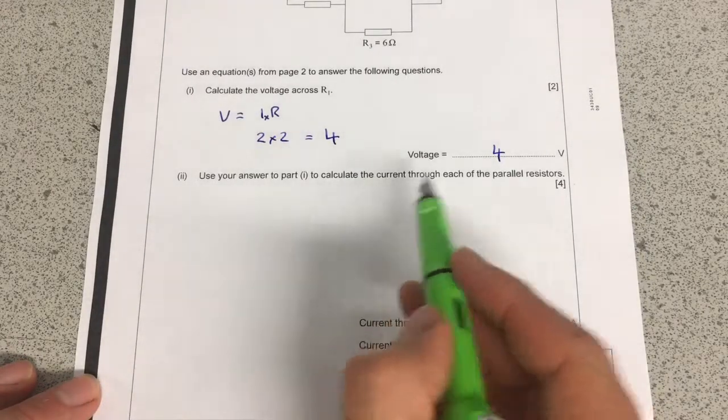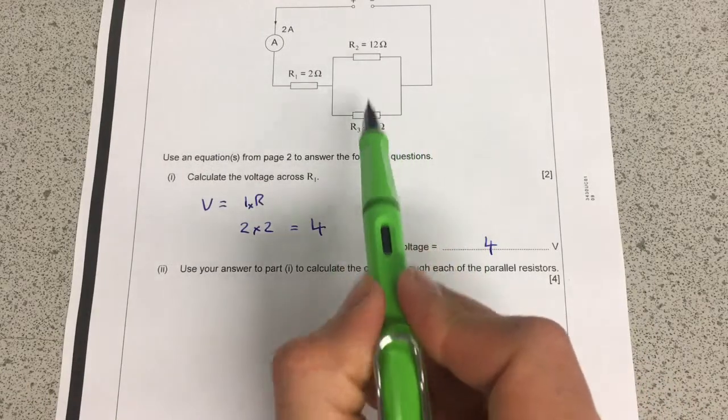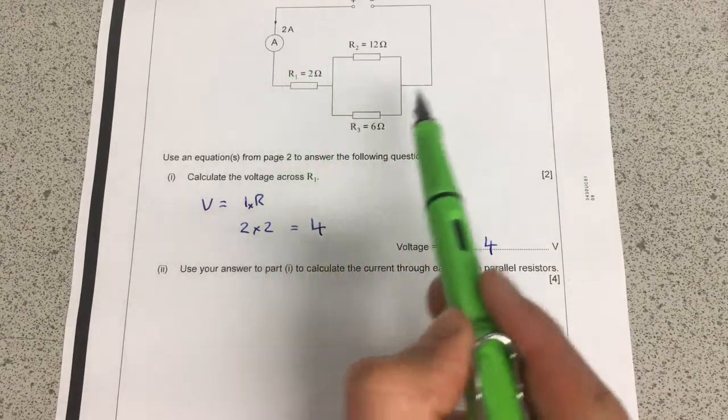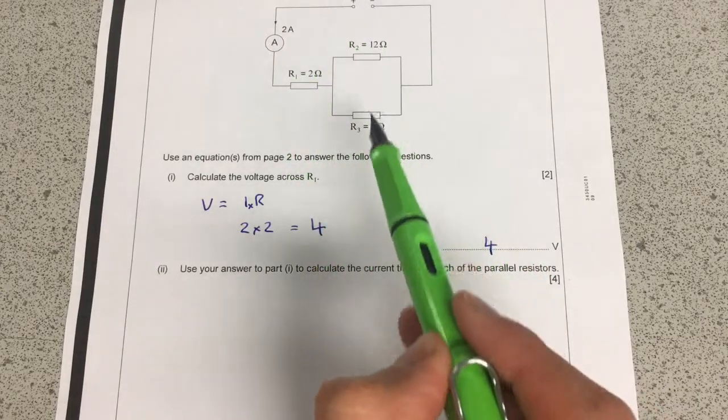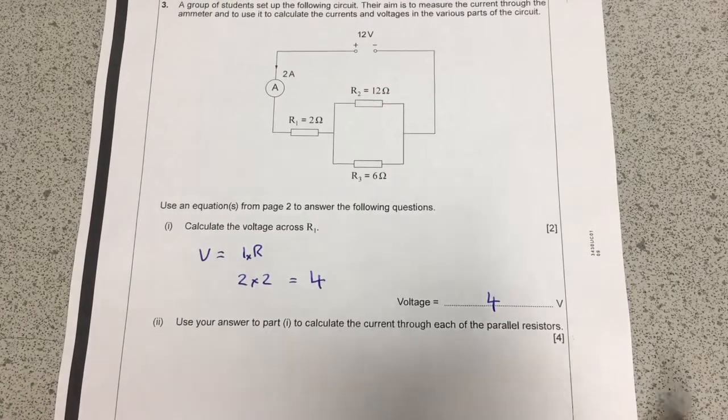And then it asks me here to use my answer from here to calculate the current through these two resistors here. Now, we know that those two will add up to 2 because the current has to be the same everywhere through, but with these two branches, we'll have independent currents adding to that 2 amps.